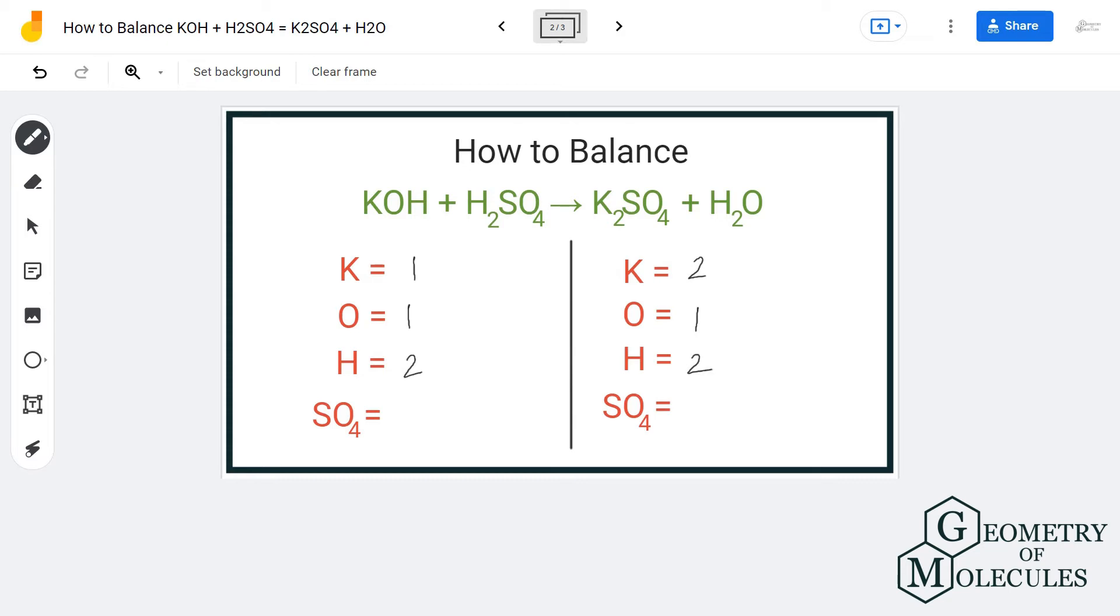So if you look at the reactant side, you'll see we have only one atom of potassium but we have two atoms of potassium on the product side. So that's not actually possible. Let's place a coefficient 2, and that will also change the number of atoms for oxygen and hydrogen.